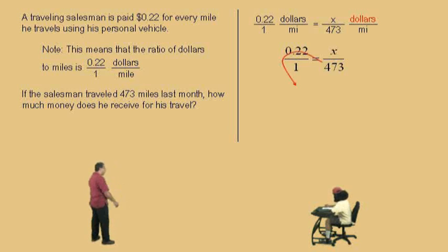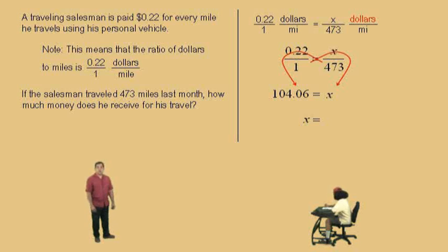Cross multiply. Very nice. So, what's 473 times 0.22? 104.06. Very nice there, Charlie. And what's 1 times x? X. Very nice there, Charlie. So, he receives $104.06.